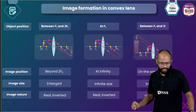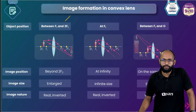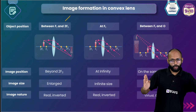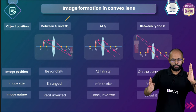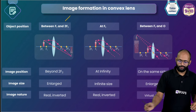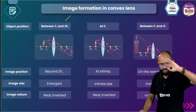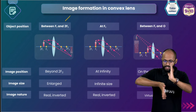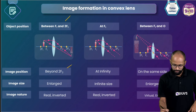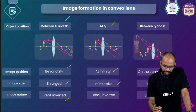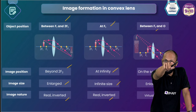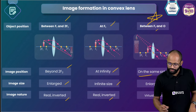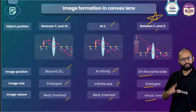When object is between F1 and 2F1, image goes beyond 2F2 — enlarged, real, inverted. See the pattern: as you bring the object closer to the lens, the image moves backwards and becomes bigger and bigger. Object at F1 gives image at infinity, infinite size, real and inverted. Special case: between F1 and optical center — image is on the same side, enlarged, virtual and erect. This is similar to the mirror case between pole and focus.